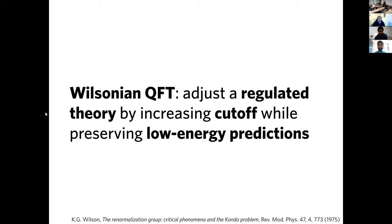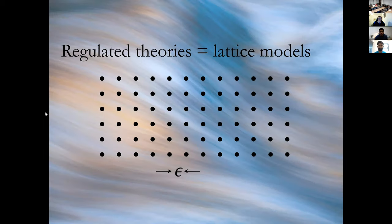The first thing I want to bring to your attention is an extraordinary understanding of quantum field theory that came in the mid-1970s. Before then, people understood QFT differently. This is thanks to Ken Wilson, who introduced the following characterization: a quantum field theory is a regulated theory adjusted by increasing a cutoff while preserving low-energy predictions. In the Wilsonian picture, we understand QFT as a regulated theory — essentially a lattice model — with a lattice spacing epsilon called the cutoff, and we take a scaling or continuous limit.